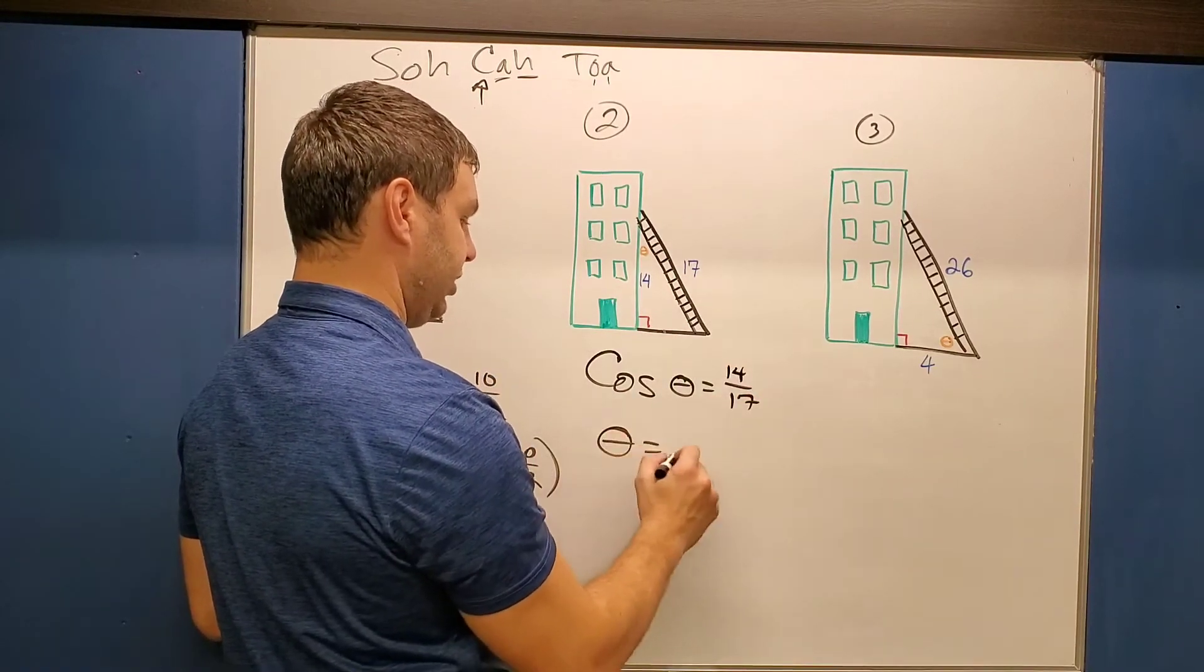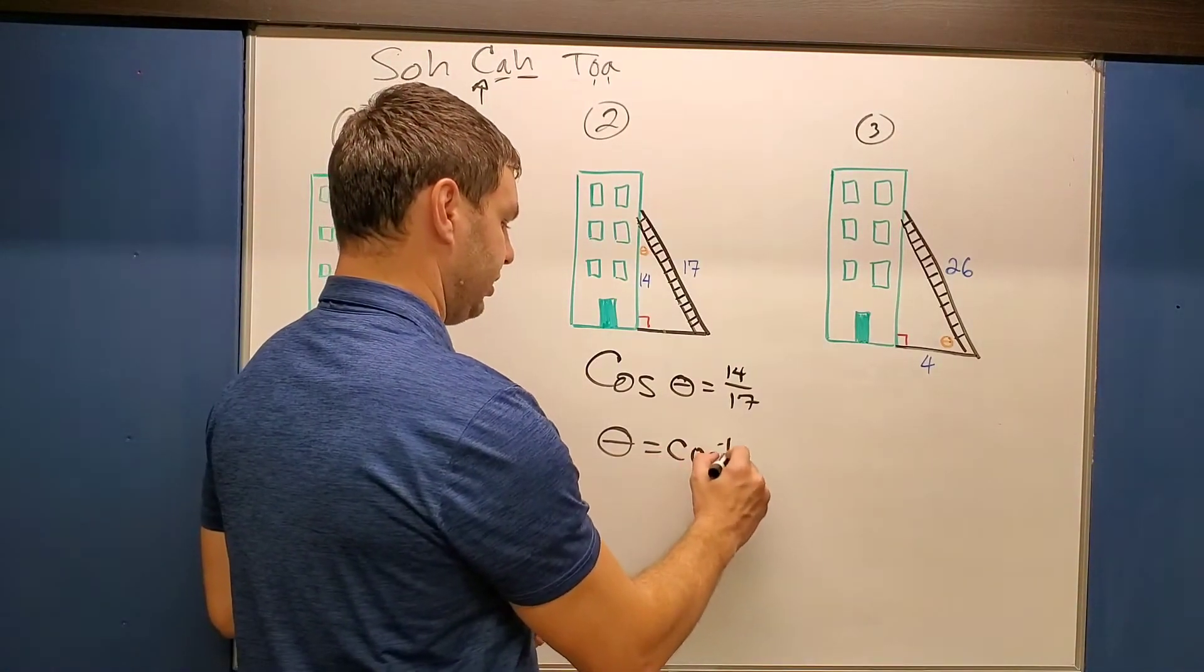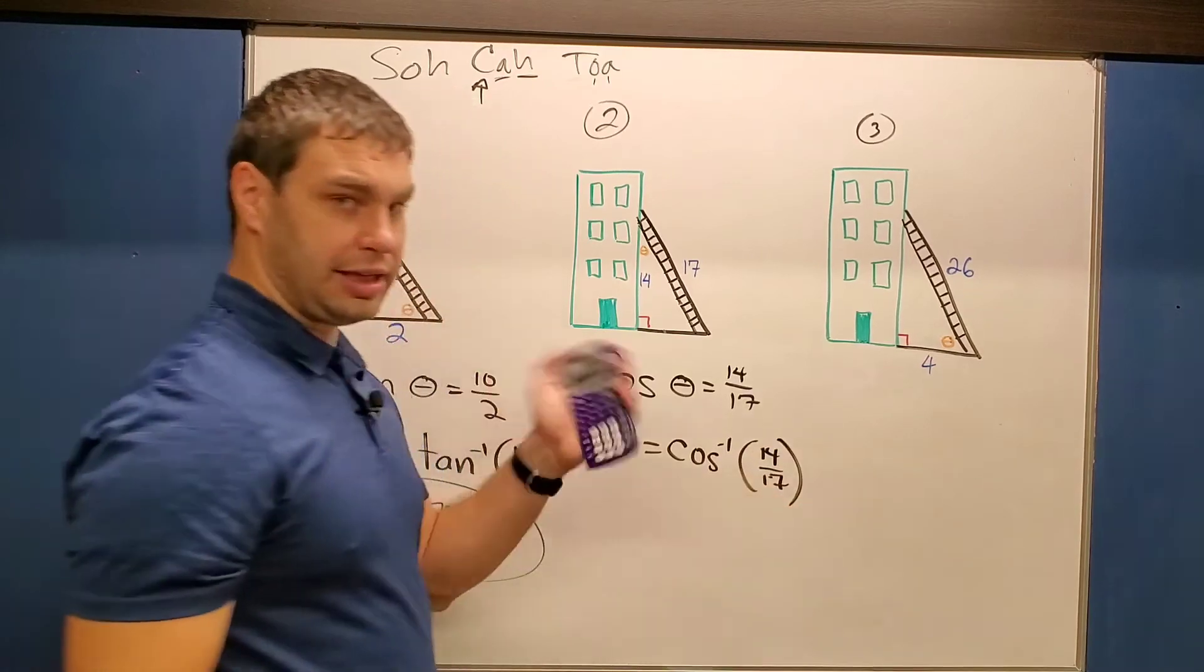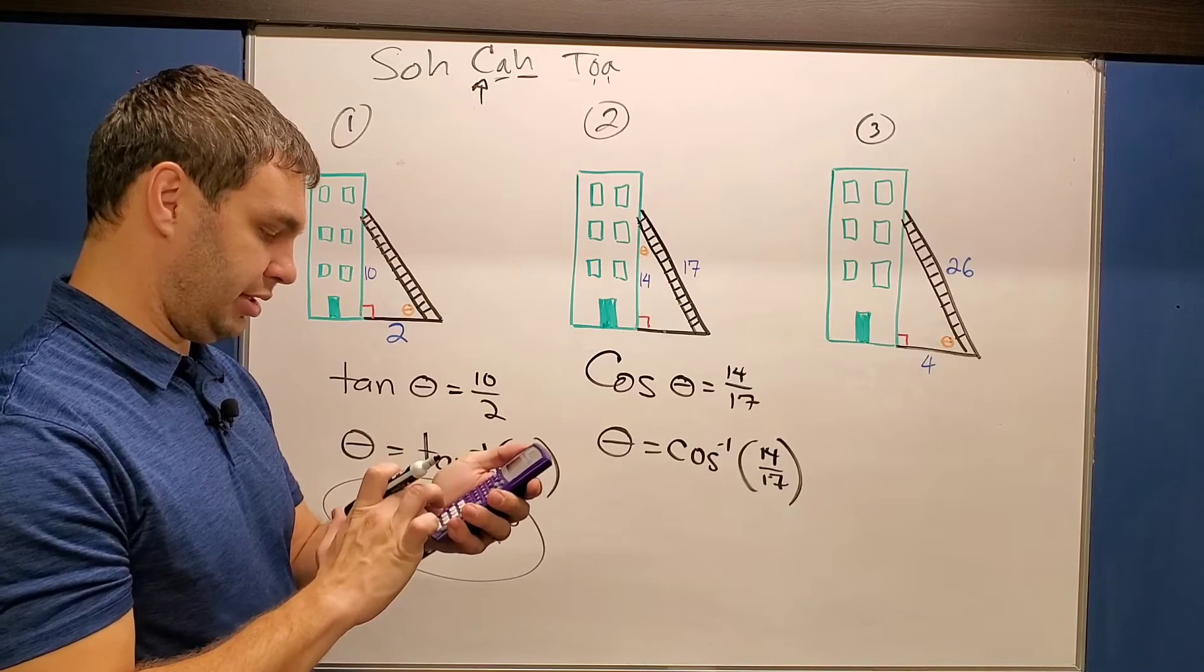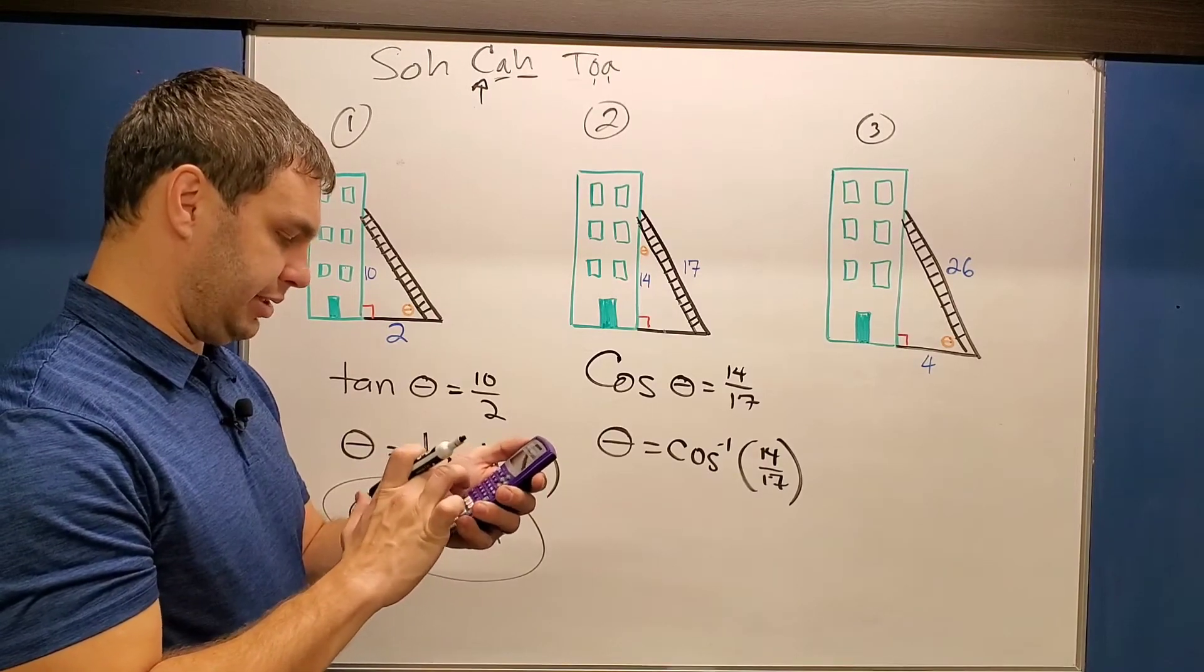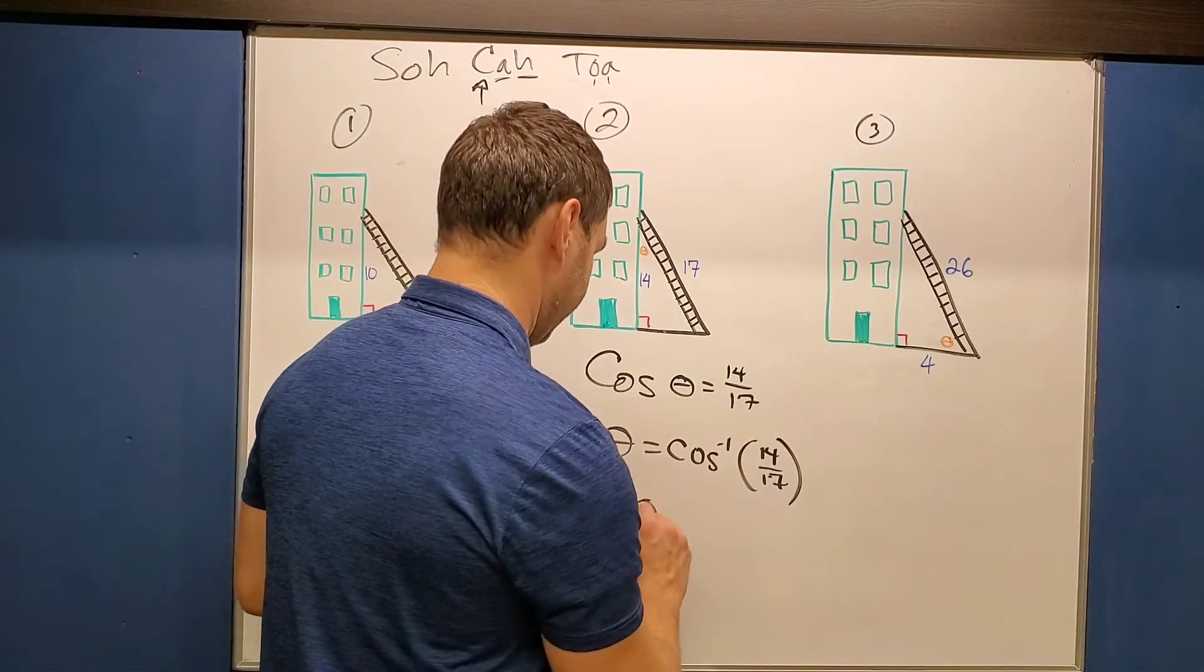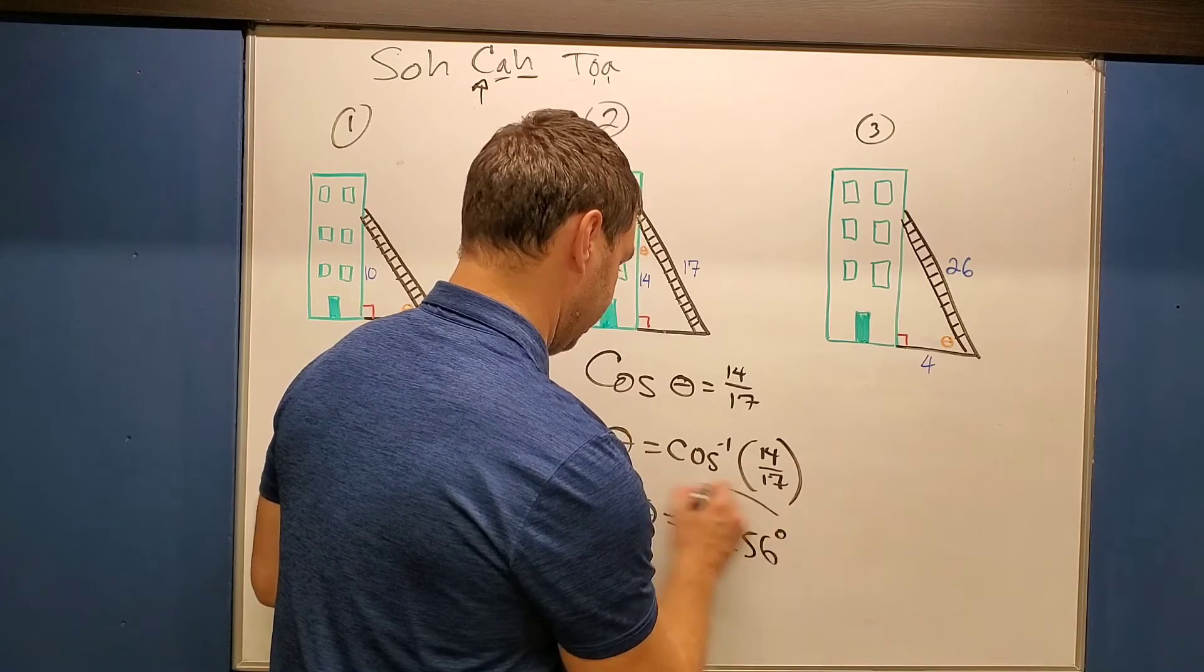So we're going to say cosine of theta, our angle, equals the adjacent 14 over the hypotenuse 17. Again, to find theta, we're going to use the inverse of that trig function cosine. So the inverse of cosine, and then just type 14 over 17 in the calculator. Let the calculator do all the work for you. Inverse cosine 14 divided by 17 is 34.56. So theta equals 34.56 degrees.